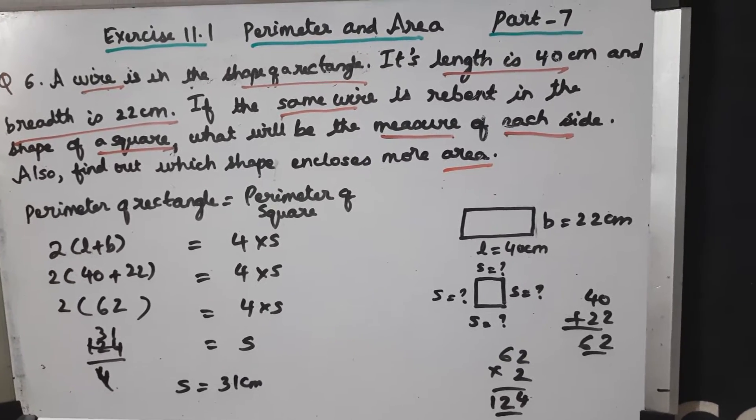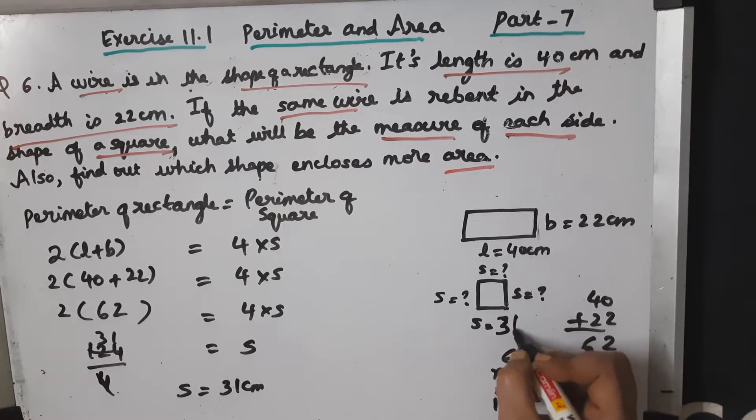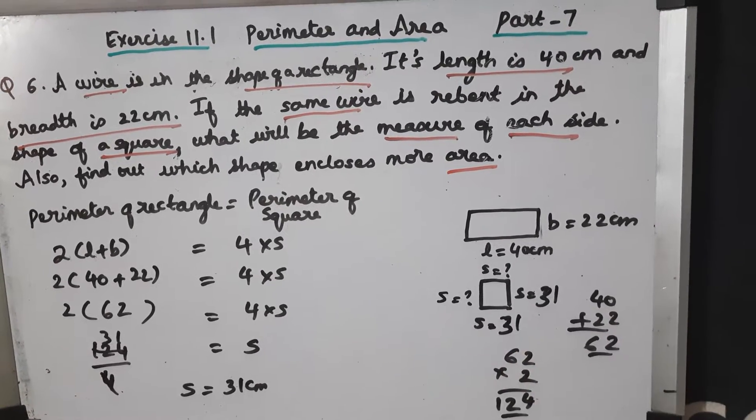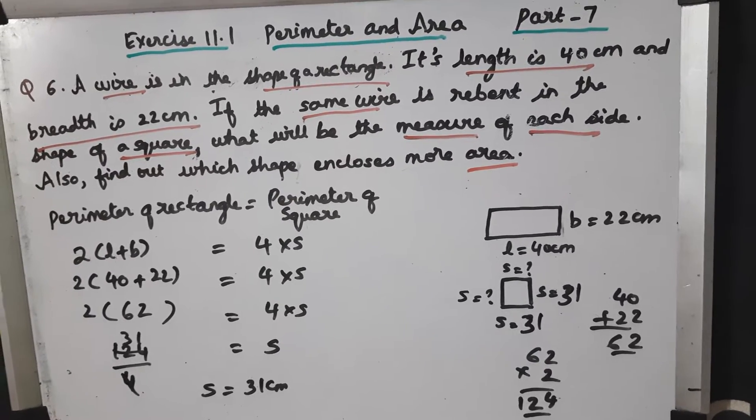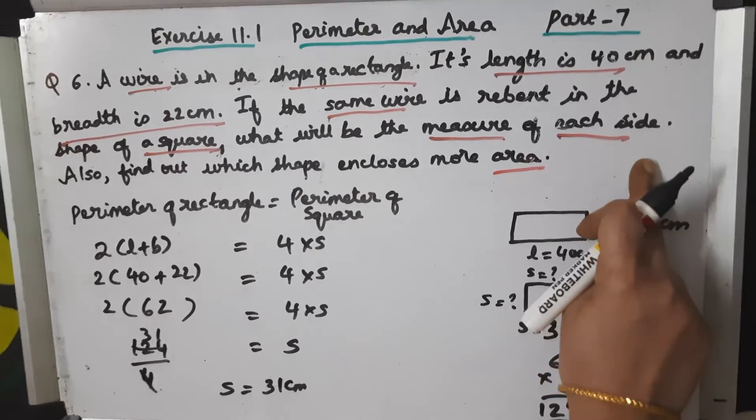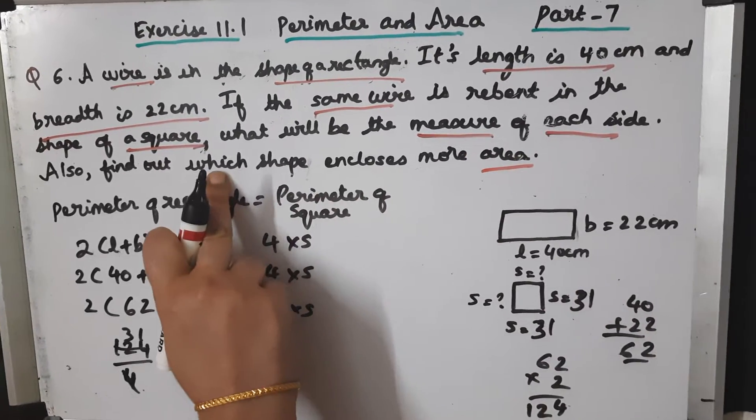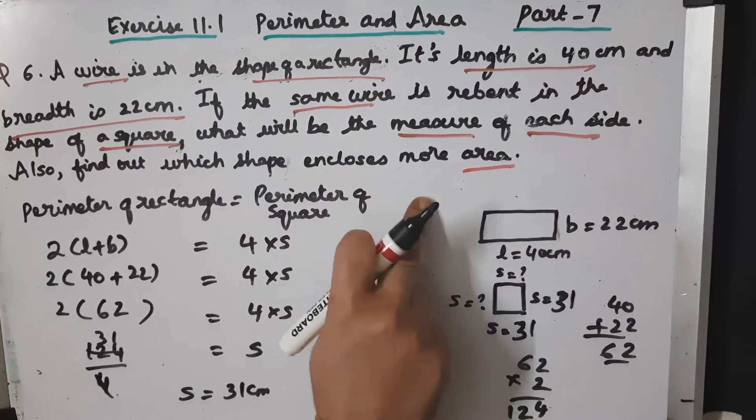S equals 31. Now we have to find out which shape has more area. For that purpose, we have to find out the area of rectangle and area of square.